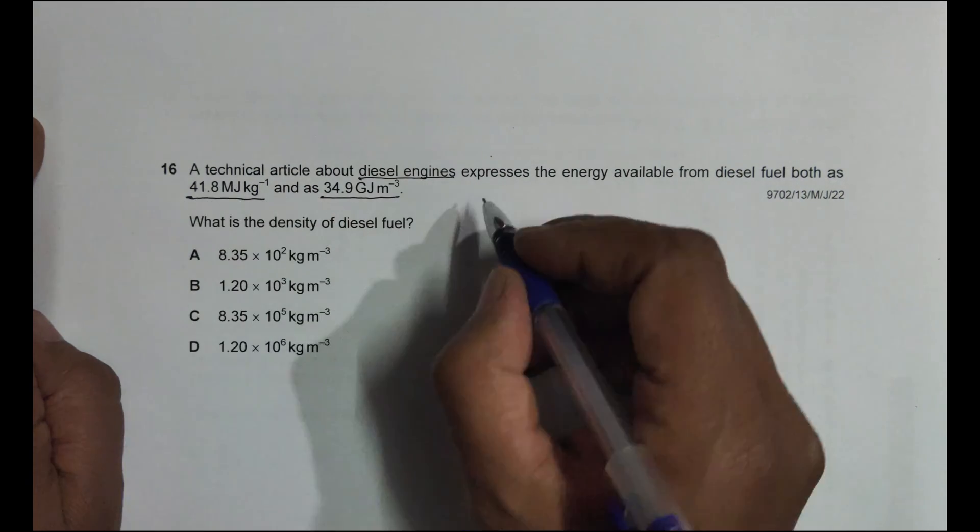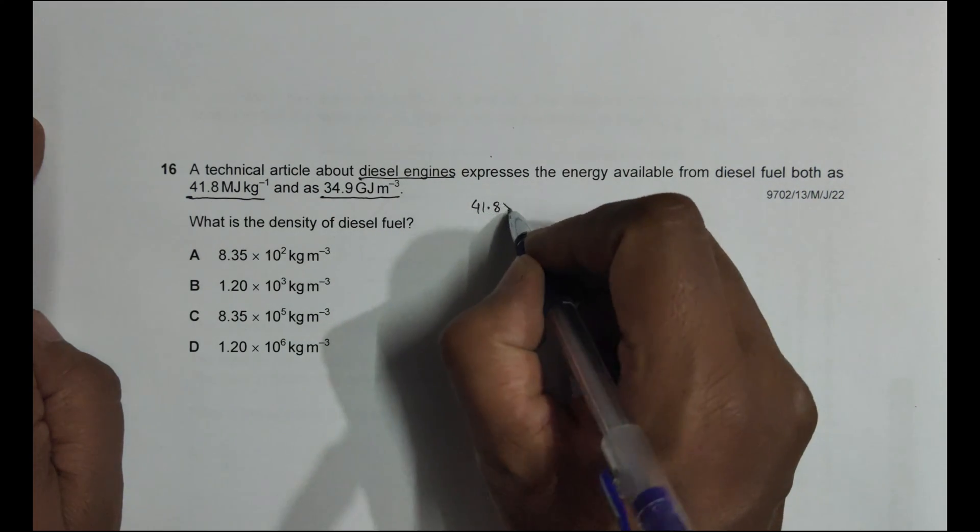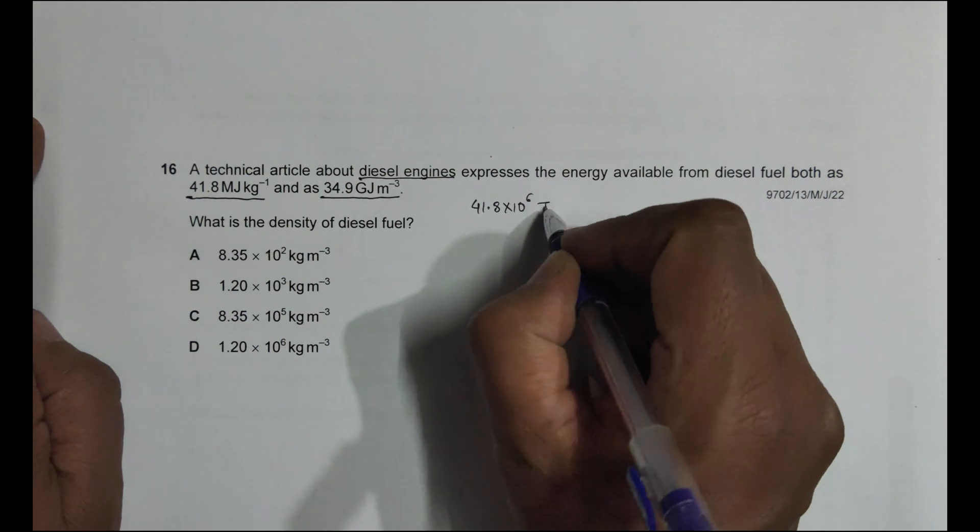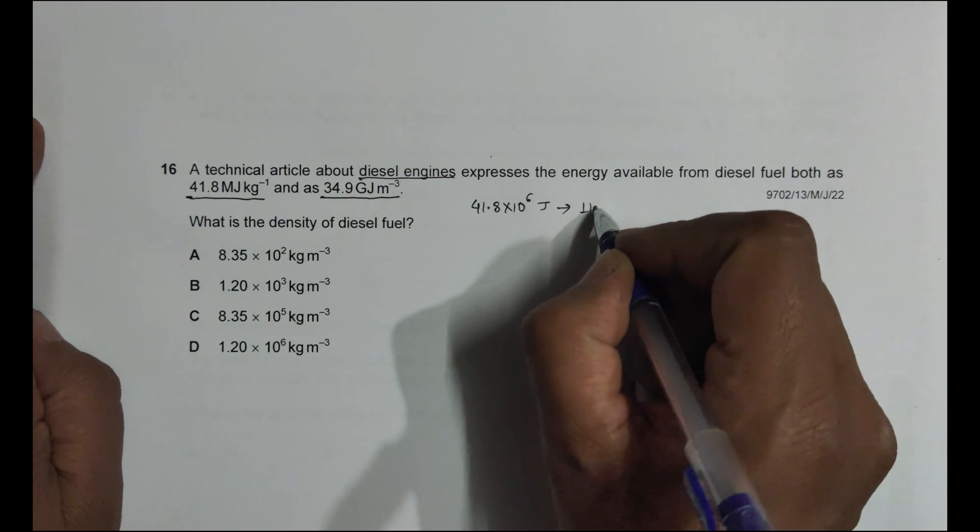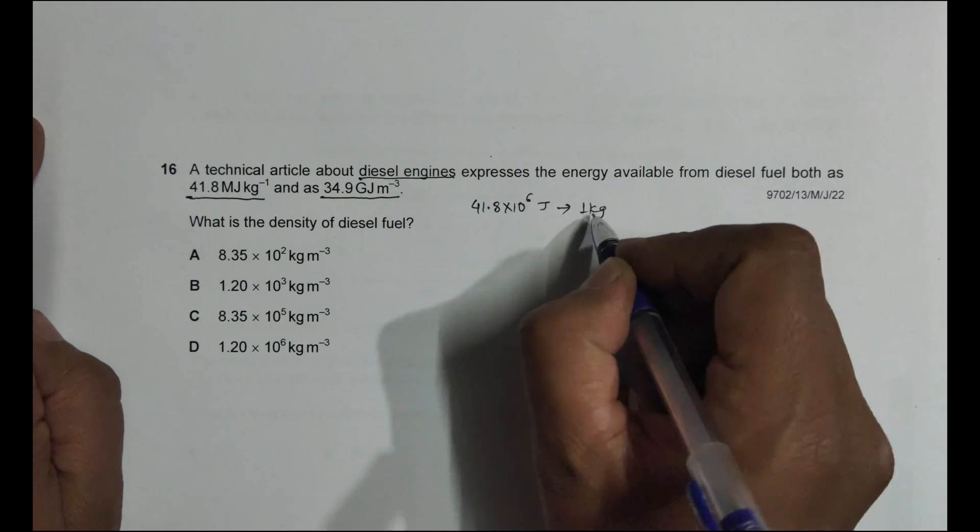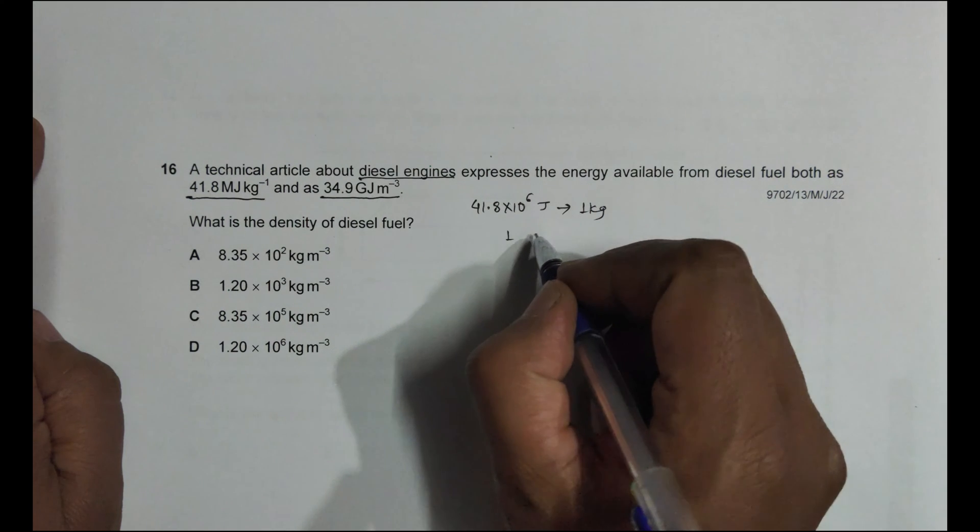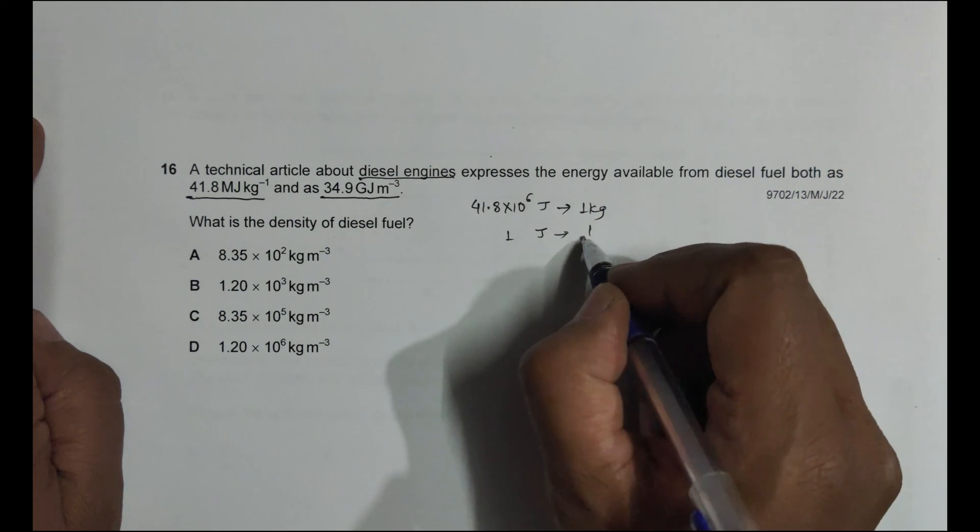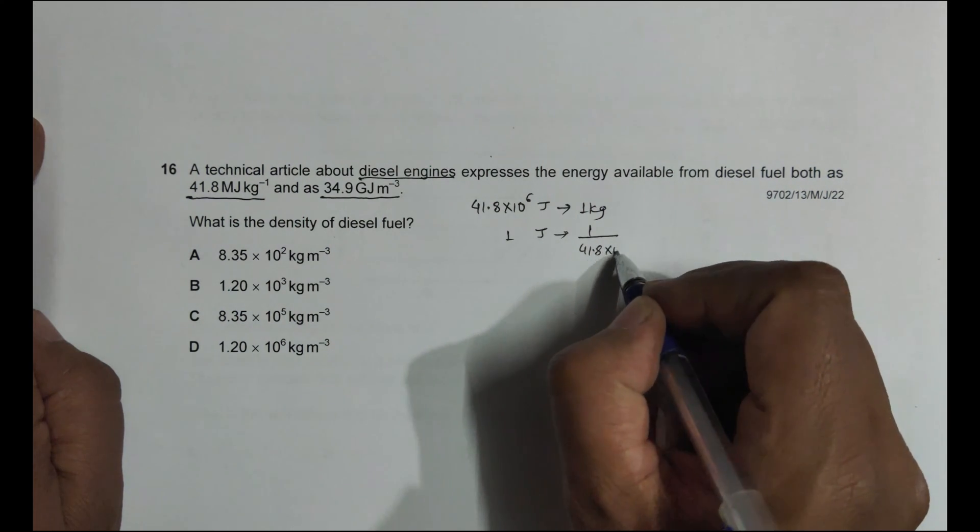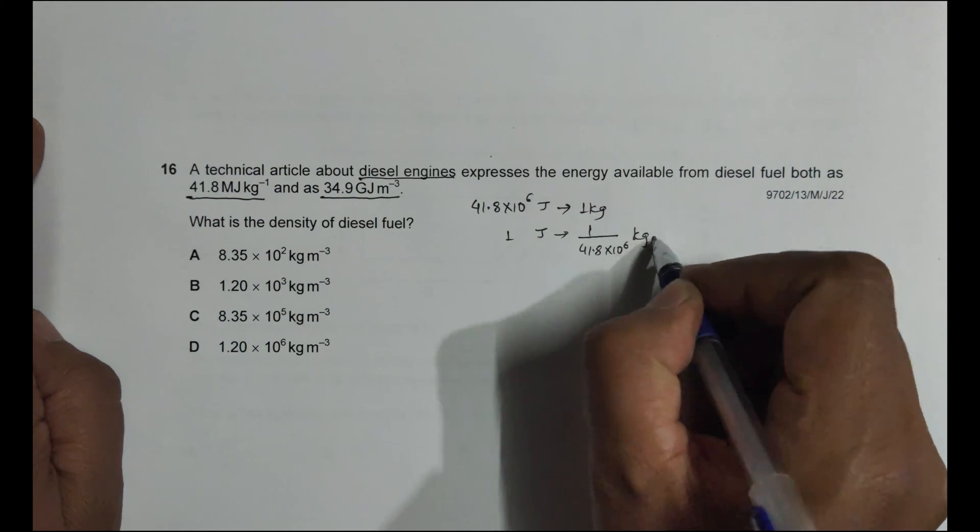So first we have the data: 41.8 mega means 10 to the power 6 joule is equivalent to 1 kg. That means this much energy is given by 1 kg. So then 1 joule energy is given by 1 by 41.8 into 10 to the power 6 kg.